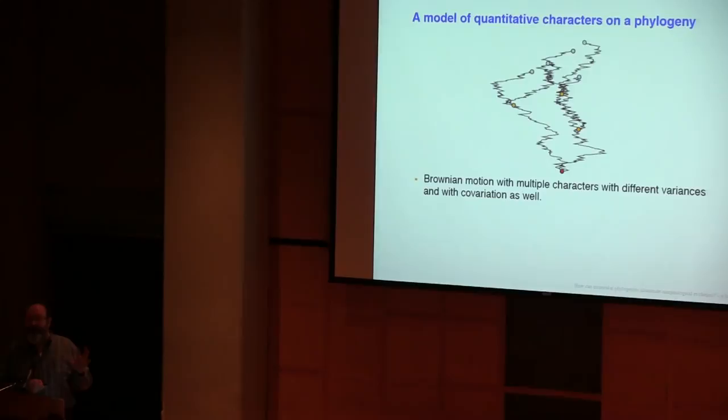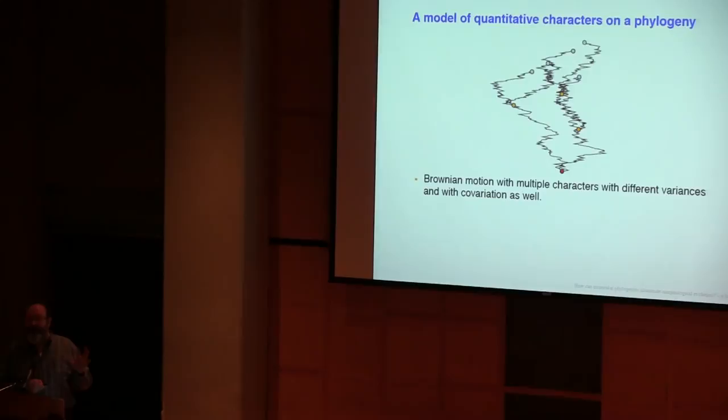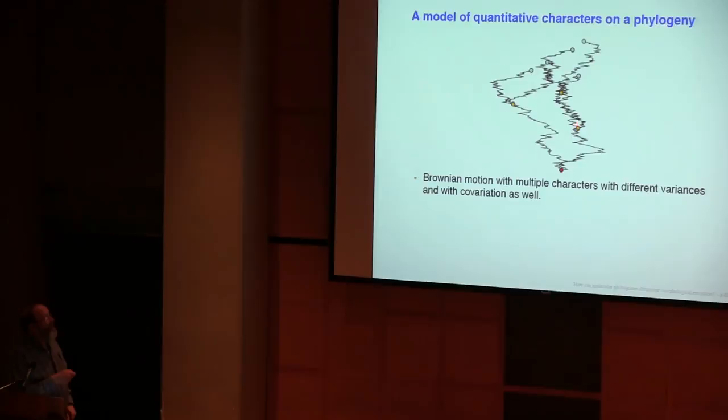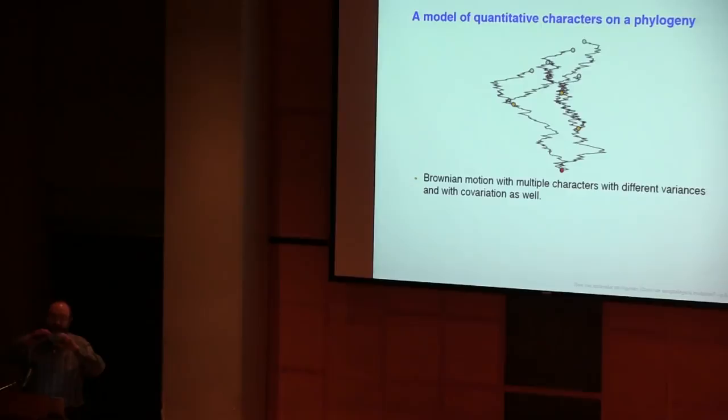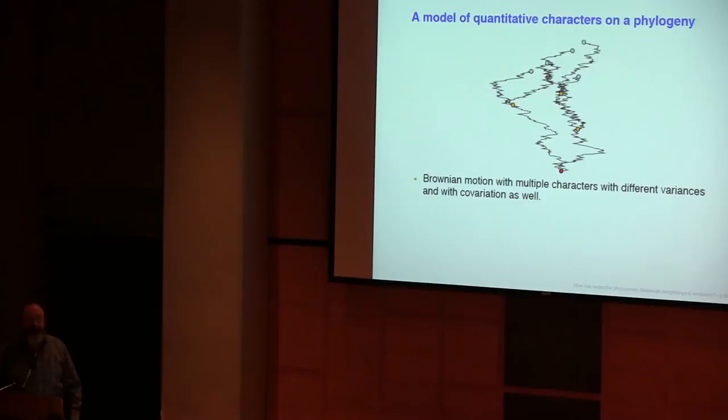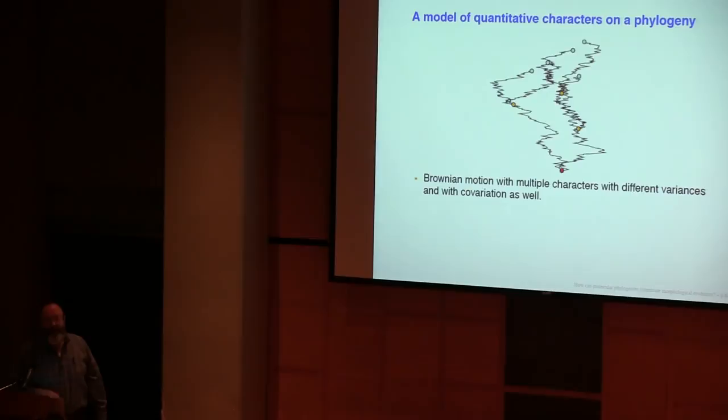And here we have a simple phylogeny of five tips, five species. And we've simulated the wanderings of a character by Brownian motion on this lineage and on this lineage. Here is an interior node that splits. They keep crossing each other. Here's another split, another split. You finally end up getting these. And you have a distribution of the values you will see at the tips. It's very noisy, but it has covariances and correlations that are determined by the shape of the phylogeny.